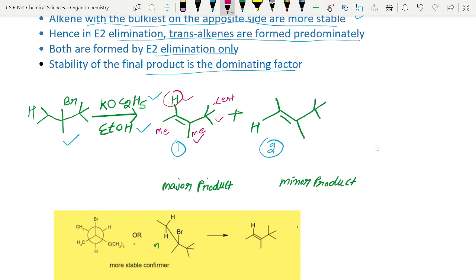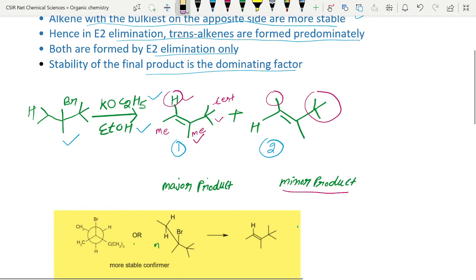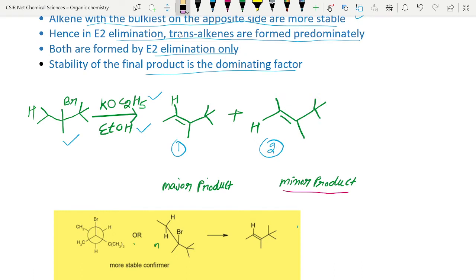So this is the major product — this is the more stable one. In the second product, the methyl and the tertiary butyl are on the same side — two bulkier groups are on the same side — so this is the minor product. Now we have to assign which one is our major product and which one is our minor product, meaning we need to give E and Z nomenclature.